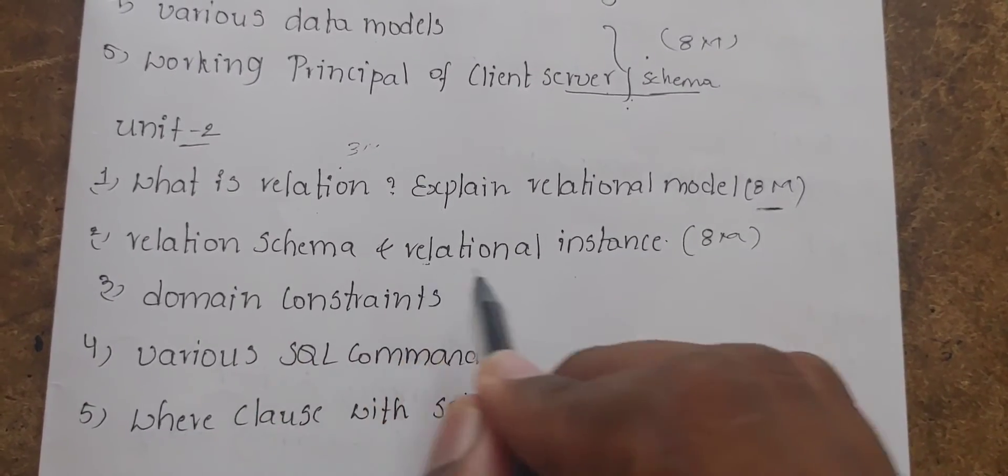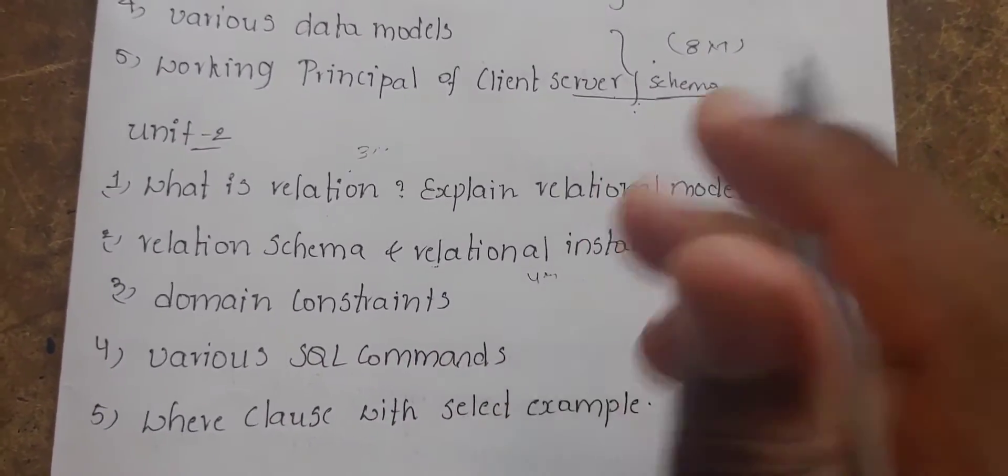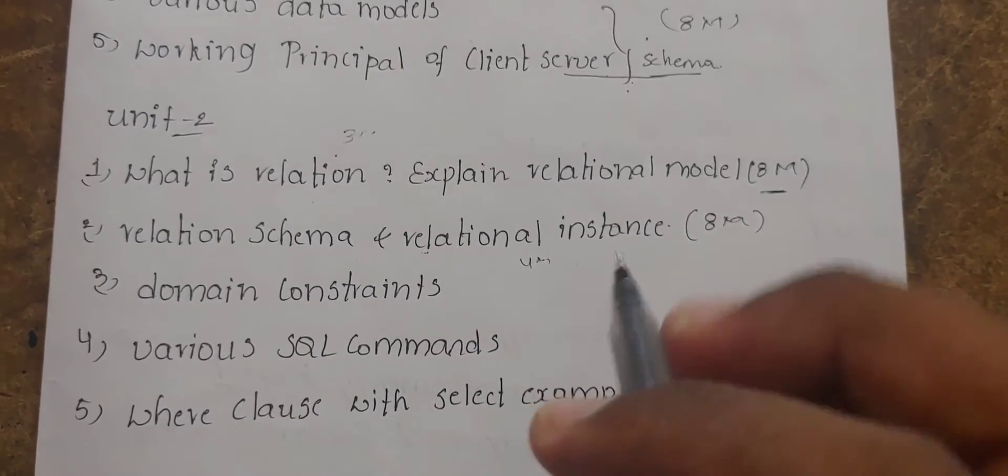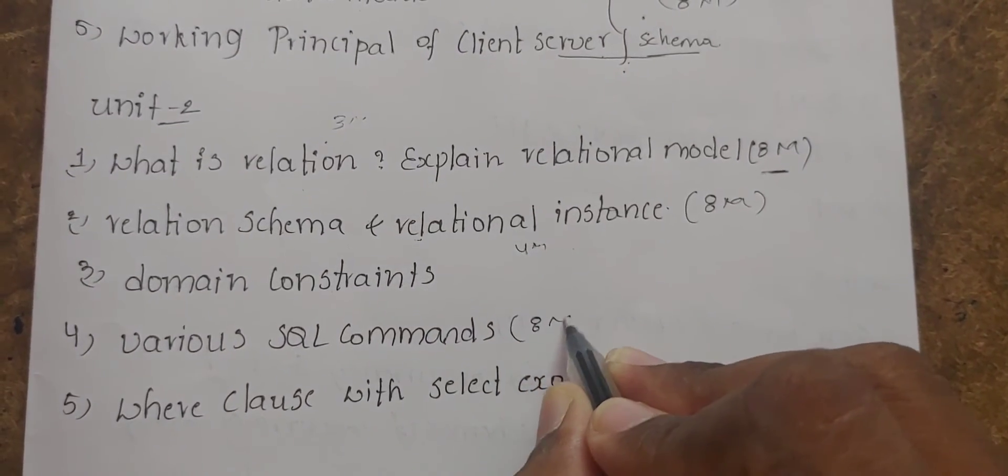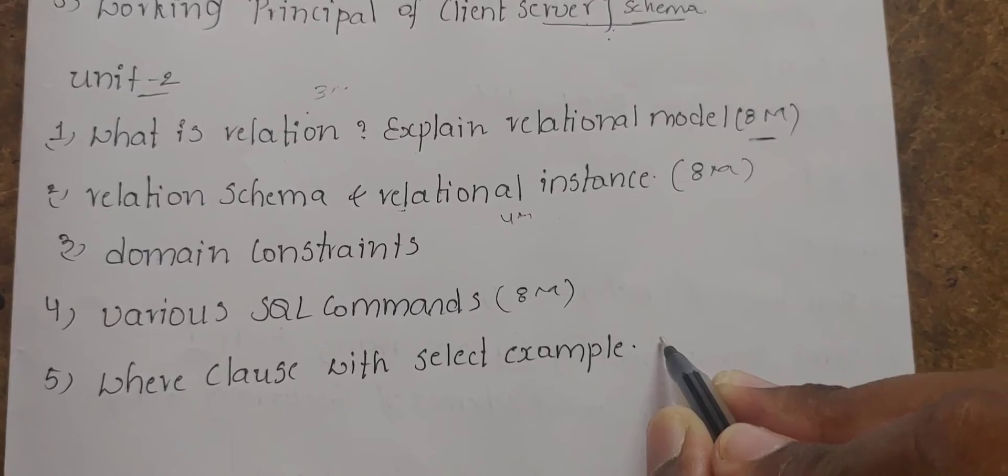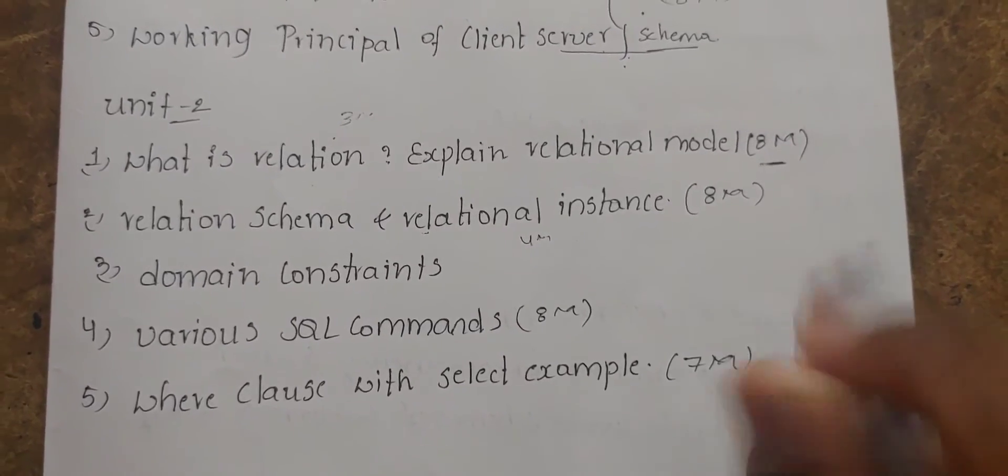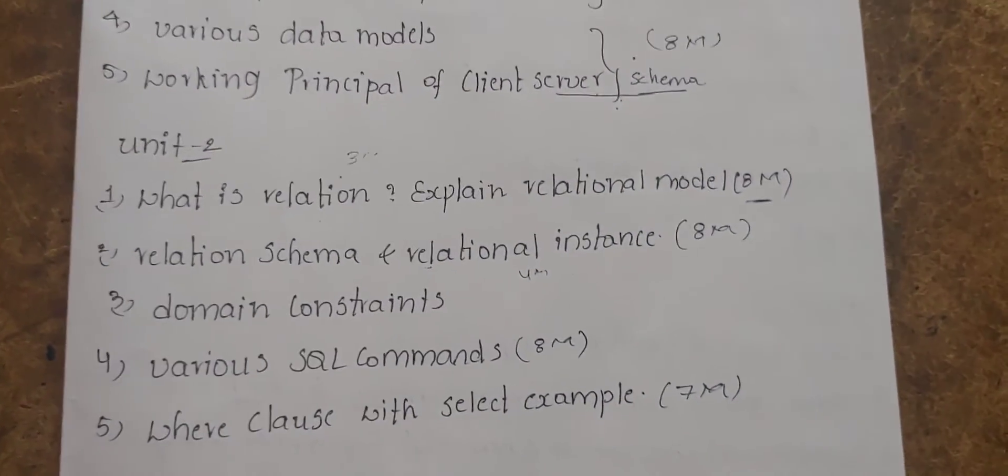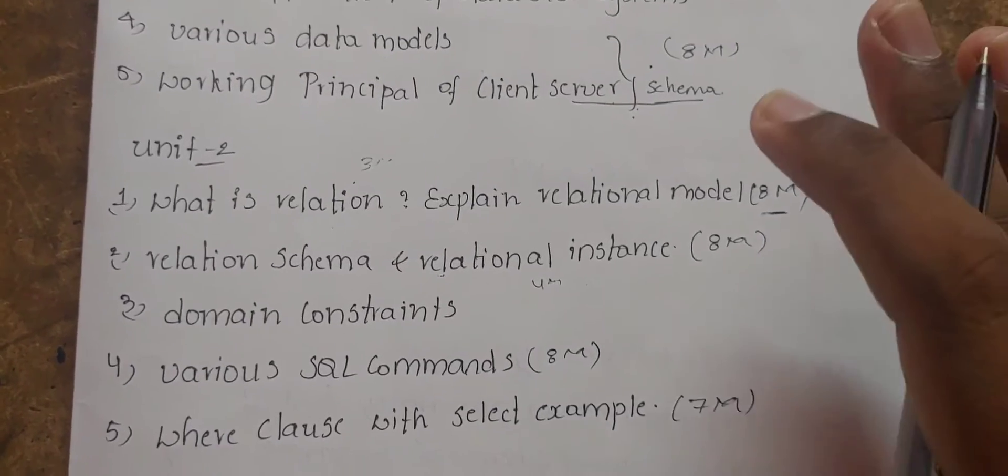Next, the definition - this is four marks. Relational schema and relational instance. Domain constraints and various SQL commands - this is eight marks question. Where clause with select example - this is seven marks question. These are the sure shot questions.